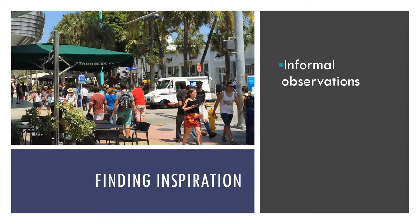Informal observations include direct observations of our own and others' behavior, as well as second-hand observations from non-scientific sources such as newspapers, books, blogs, and so on. For example, you might notice that you always seem to be in the slowest moving line at the grocery store — could it be that most people think the same thing? Or you might read in a local newspaper about people donating money and food to a local family whose house has burned down, and begin to wonder about who makes such donations and why.